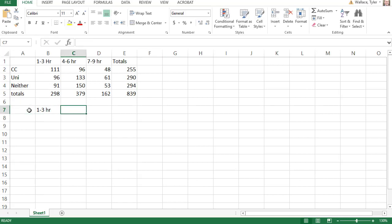Next thing I'm going to do is I'm going to copy my labels down here. One to three hours, four to six hours, and seven to nine hours. And my CC, university, and neither. And then in the first row, first column, I'm going to hit equals.